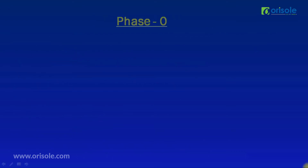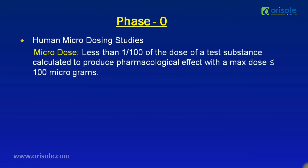Now let us see the phase 0 studies. Phase 0 studies are also called human microdosing studies. A microdose means less than 1/100th of the dose of a test substance calculated to produce a pharmacological effect, with a maximum dose less than or equal to 100 micrograms.